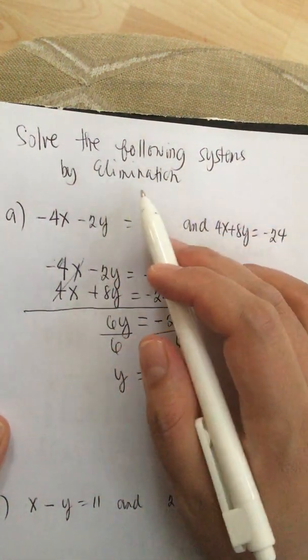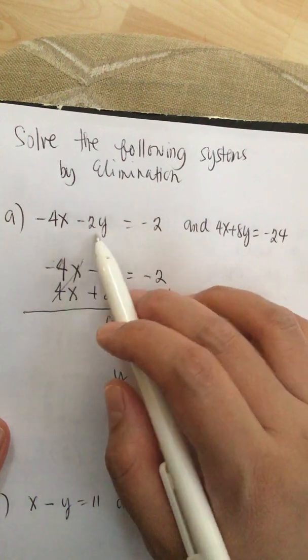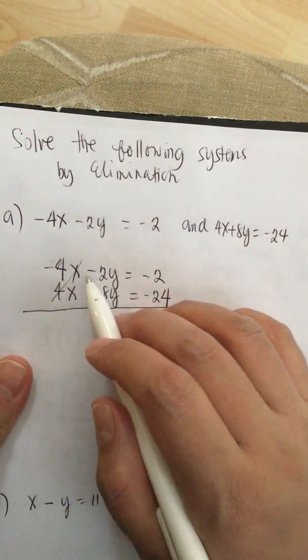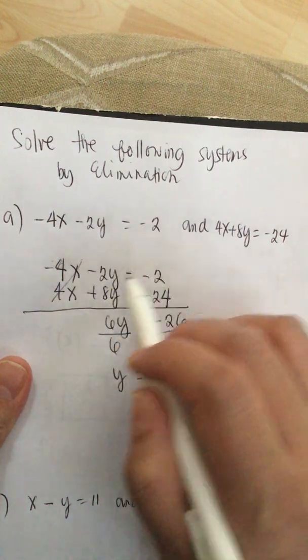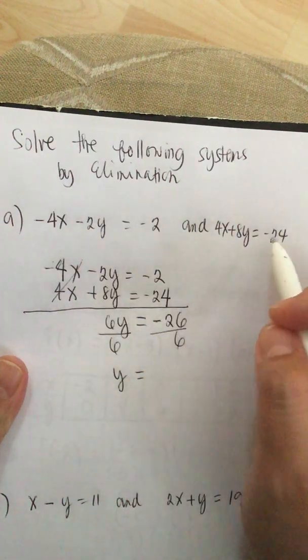Solve the following systems by elimination. Elimination means that we eliminate one of the variables and solve the remaining variable. So we have -4x - 2y = -2, and the other equation is 4x + 8y = -24.